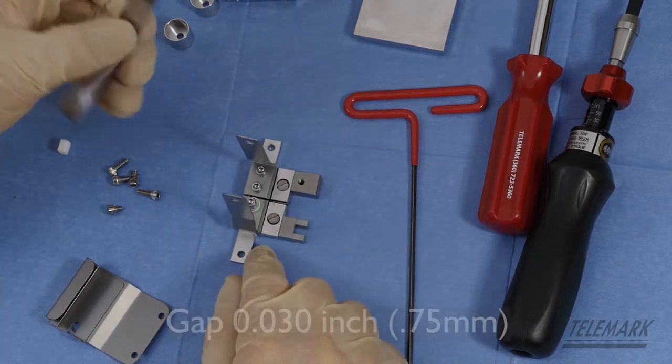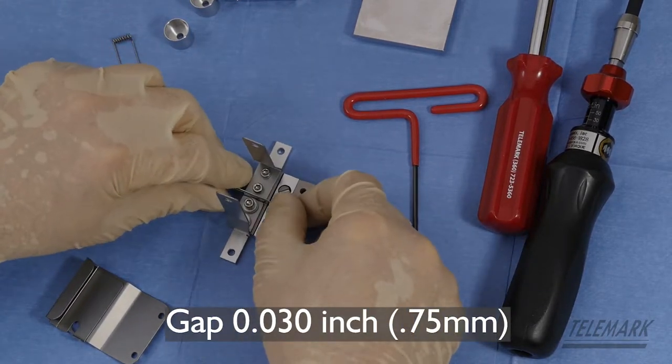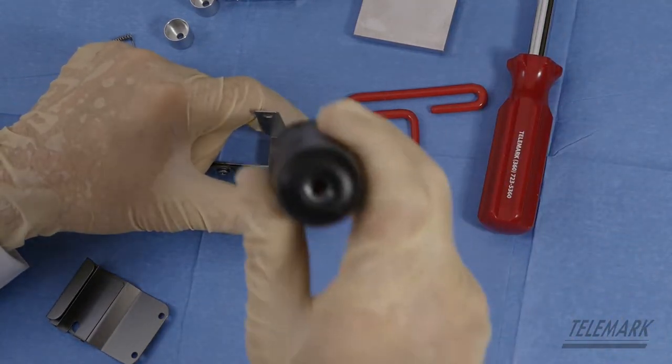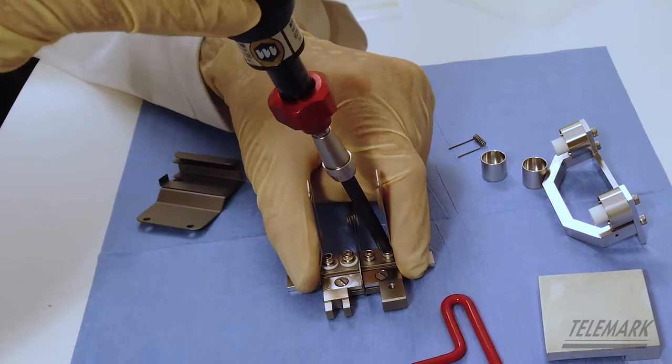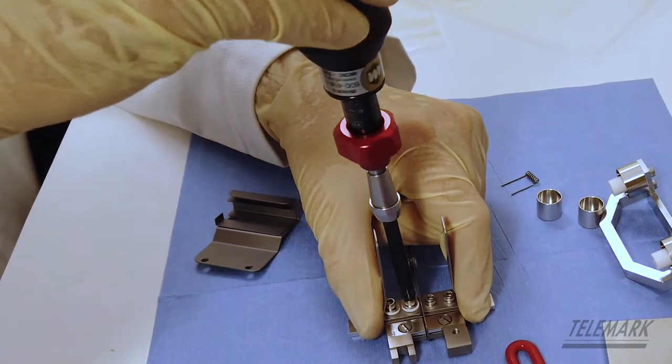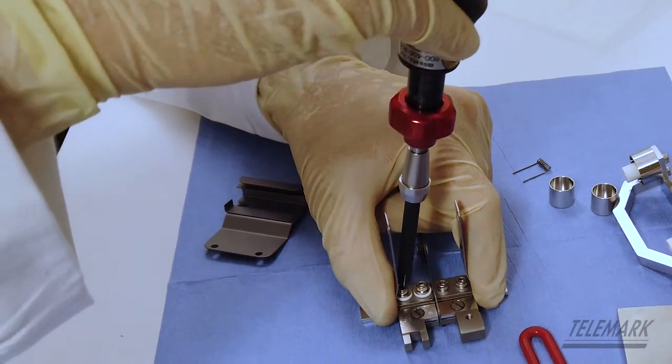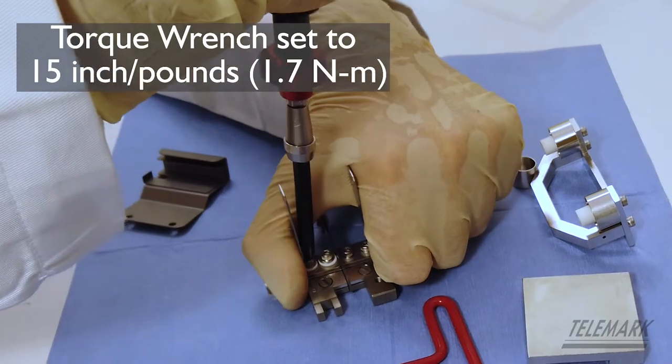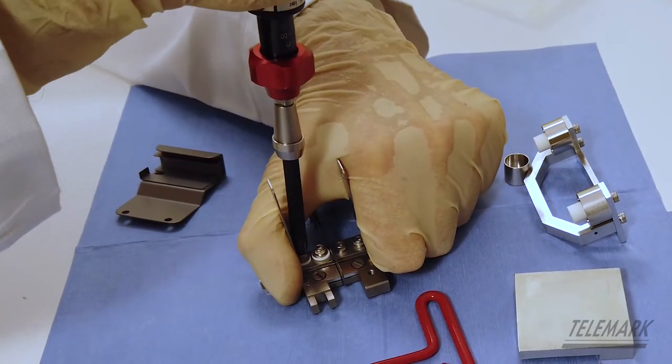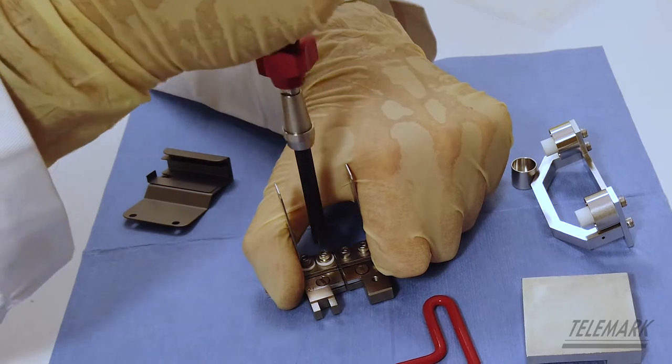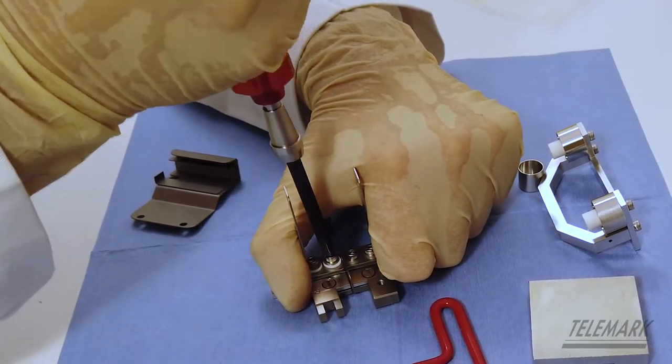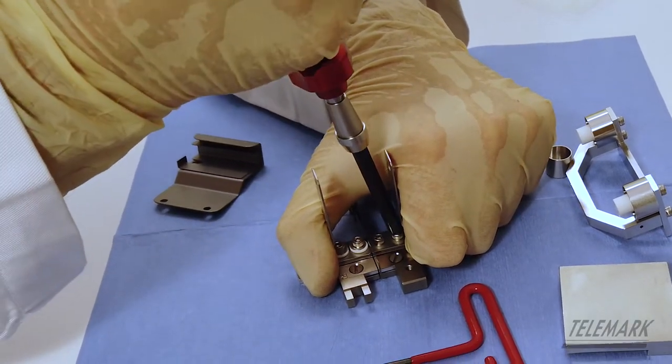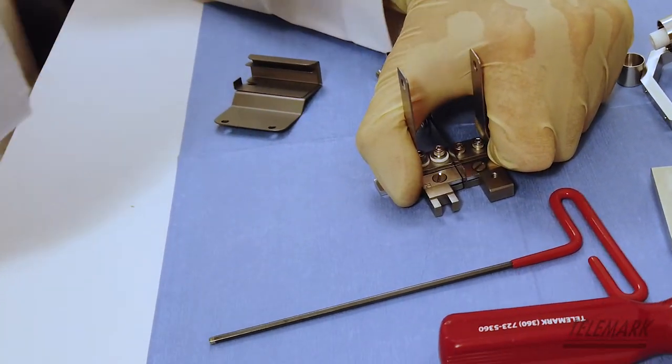Grab a feeler gauge. In this case they're set up for 30 thousandths, so you can gap the cathode blocks at 30 thousandths. Grab the torque wrench and snug them all down. Pinch on the cathode blocks, forcing them against the feeler gauge, and lock it all down.